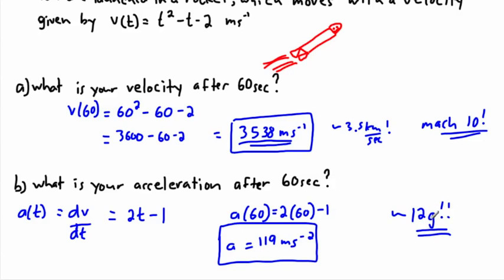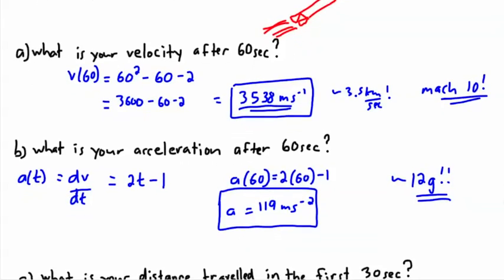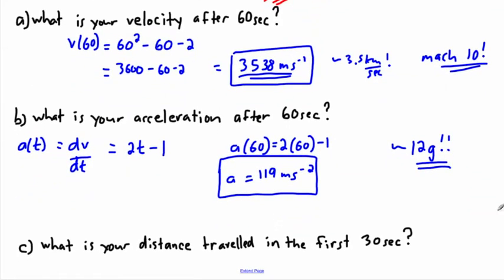At 12 g's, unless you have a g-suit and a lot of training, you're very likely passed out. Most people can only handle a few g's before losing consciousness. With training, you can stay awake longer — up to maybe six or even nine g's.